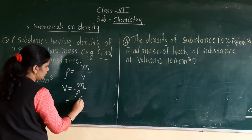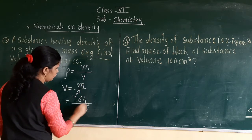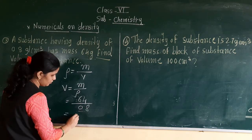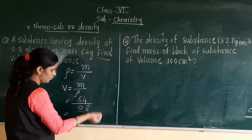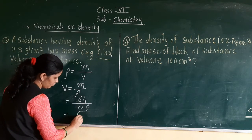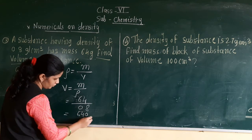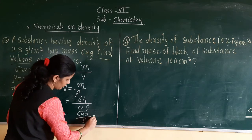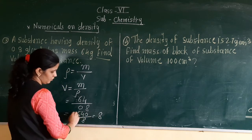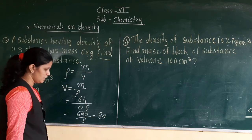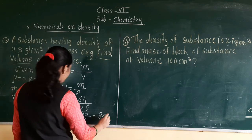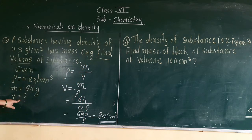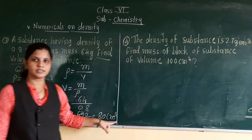So mass 64 divided by 0.8. We will remove the decimal point — multiply numerator and denominator by 10 — giving 640 divided by 8, which equals 80. So the volume is equal to 80 cm cube.